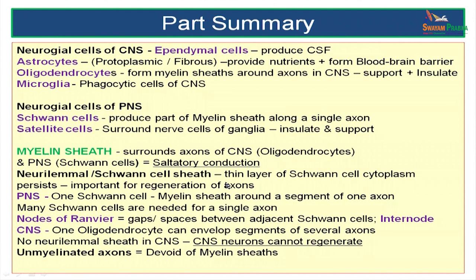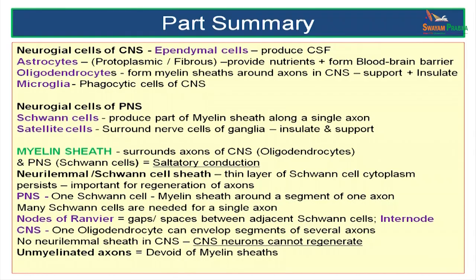Let us summarize. We have spoken about the neuroglial cells of the central nervous system — ependymal cells, microglia, the two types of astrocytes and the oligodendrocytes. We have also spoken about neuroglial cells in the peripheral nervous system — Schwann cells and satellite cells. We talked about the process of myelination in the CNS by oligodendrocytes and in the PNS by Schwann cells, differences between these two processes, nonmyelinated axons, nodes of Ranvier, and the internode as the space between two nodes of Ranvier covered by one Schwann cell.